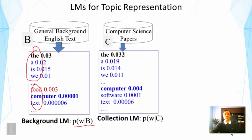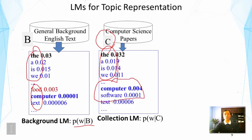Now let's look at another text — a collection of computer science research papers. Estimating again with the maximum likelihood estimator by simply normalizing frequencies, the top of the distribution looks similar since those common words occur everywhere. But as we go down, we see words more related to computer science: 'computer,' 'software,' 'text,' etc. The word 'computer' has a much smaller probability in the general English model than in the CS model, and this distribution characterizes the topic of the corresponding text.